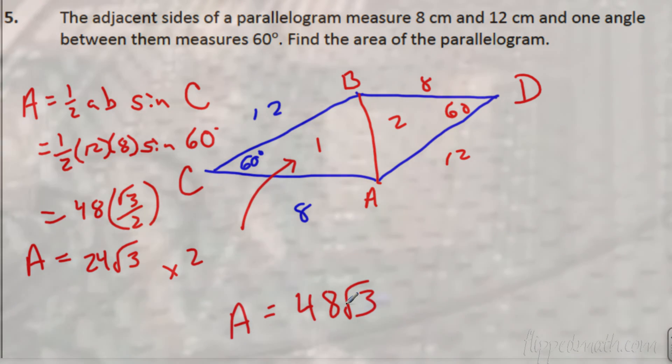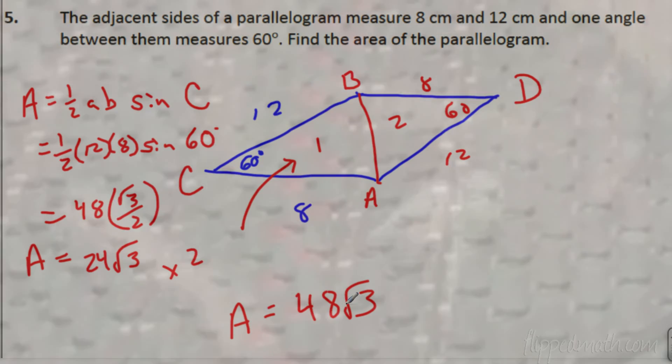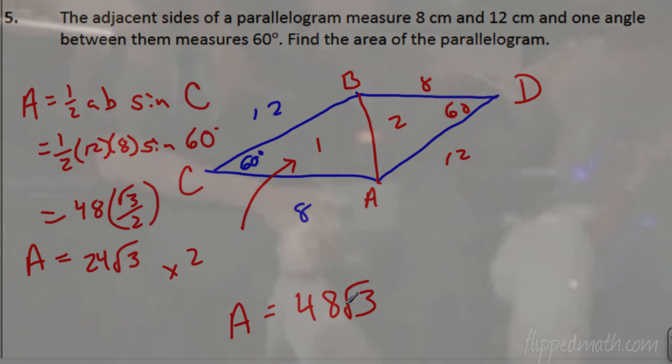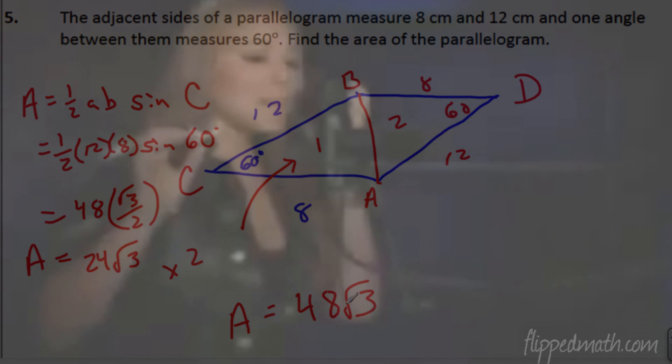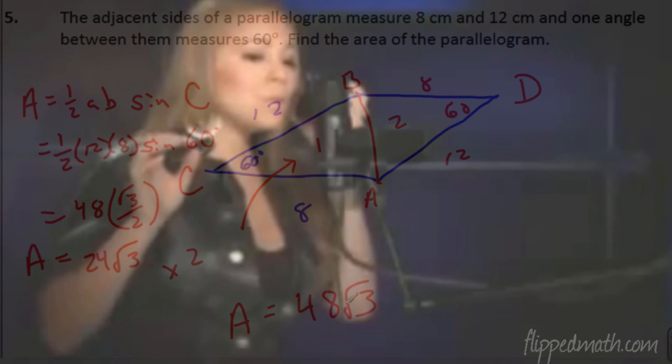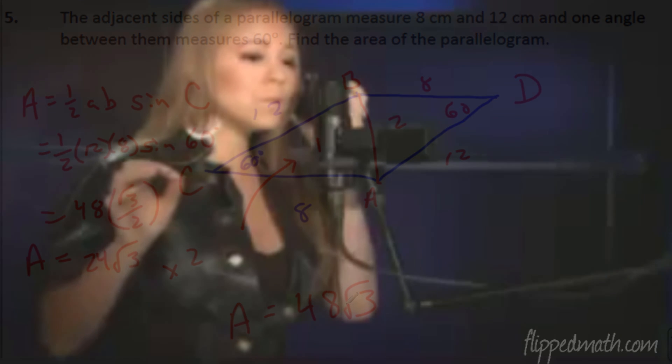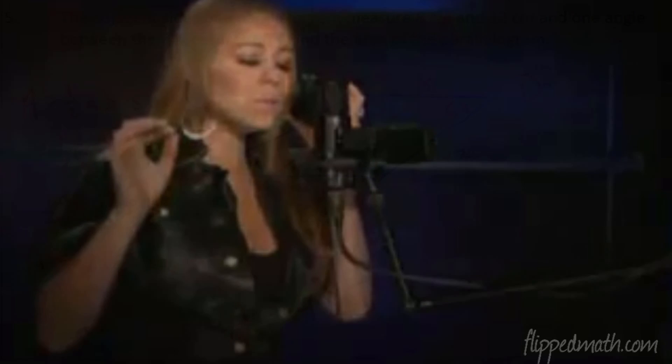So, you have two formulas. One half A, B sine of C. And you have Heron's formula or Hero's formula. So that we can listen to some more Mariah. Mr. Bean will be happy. Mr. Kelly Baum will remember. It's nice to be important. More important to be nice. One more thing. You're going to need a calculator for the application problems.